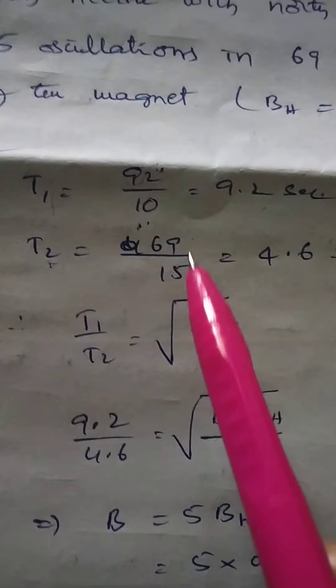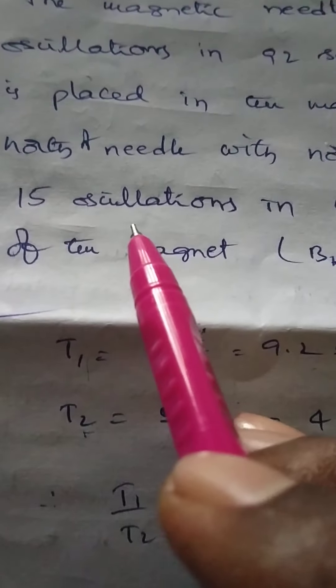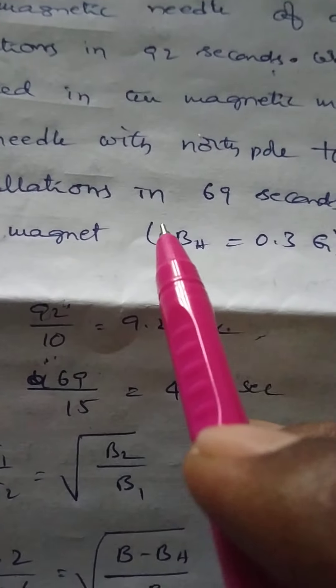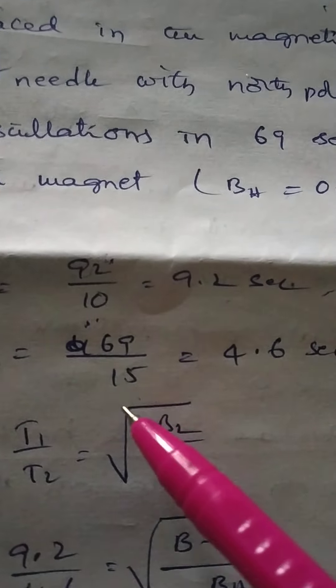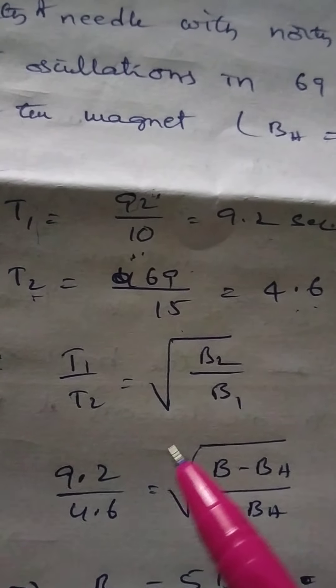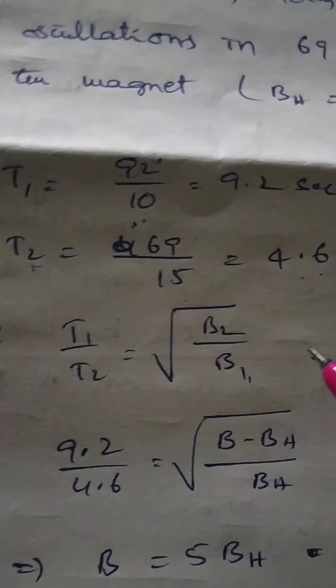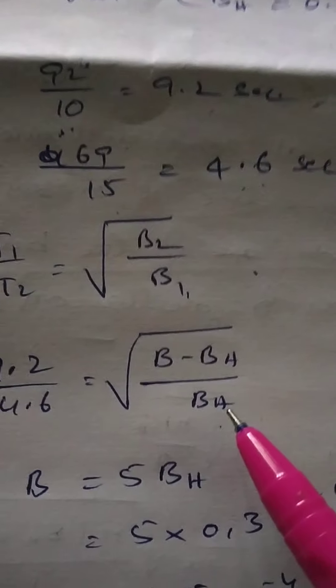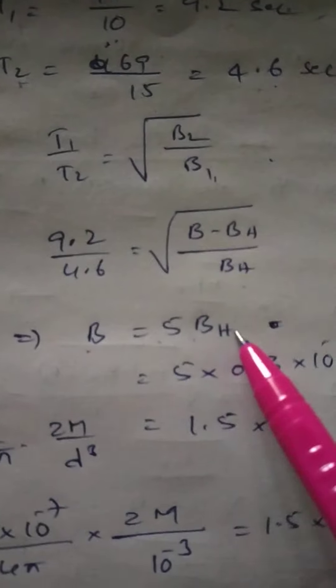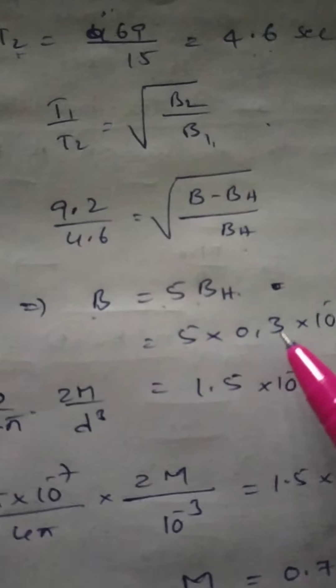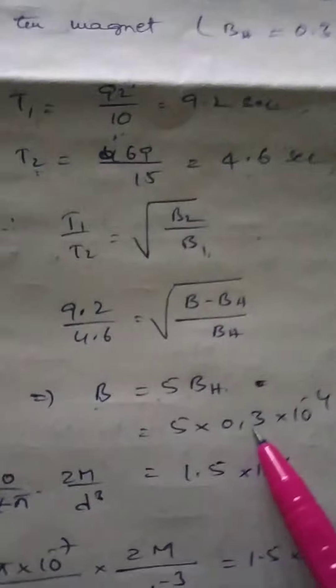In the second case, T2 = 69/15 = 4.6 seconds. The relation between T and B is T1/T2 = √(B2/B1), since T is proportional to 1/√B. So 9.2/4.6 = √((B − Bh)/Bh). Solving this gives B = 5×Bh.